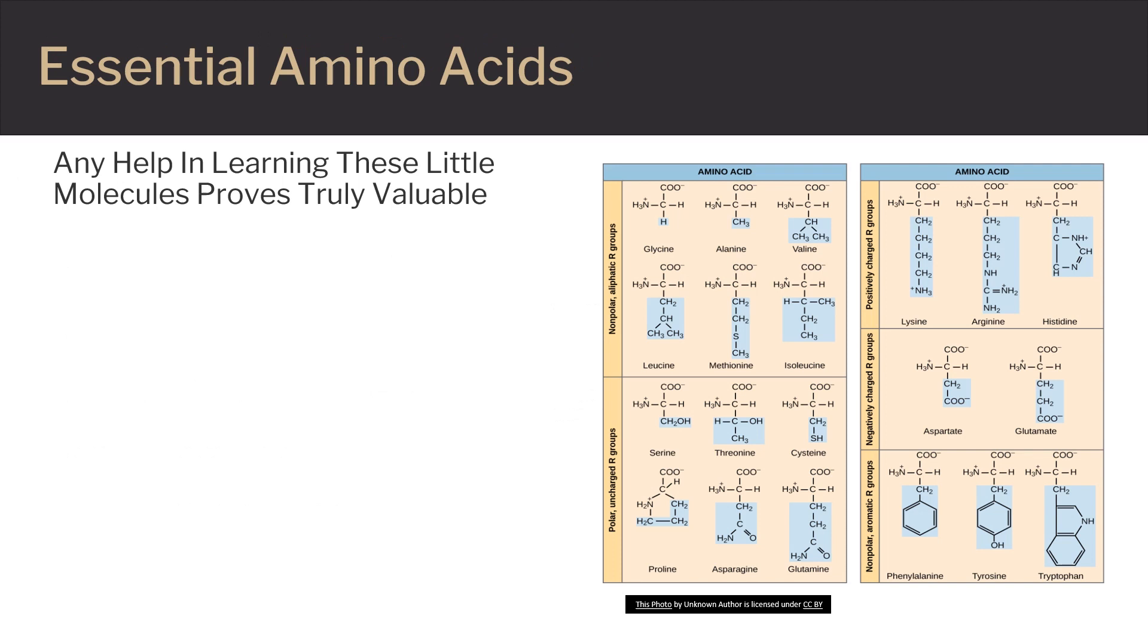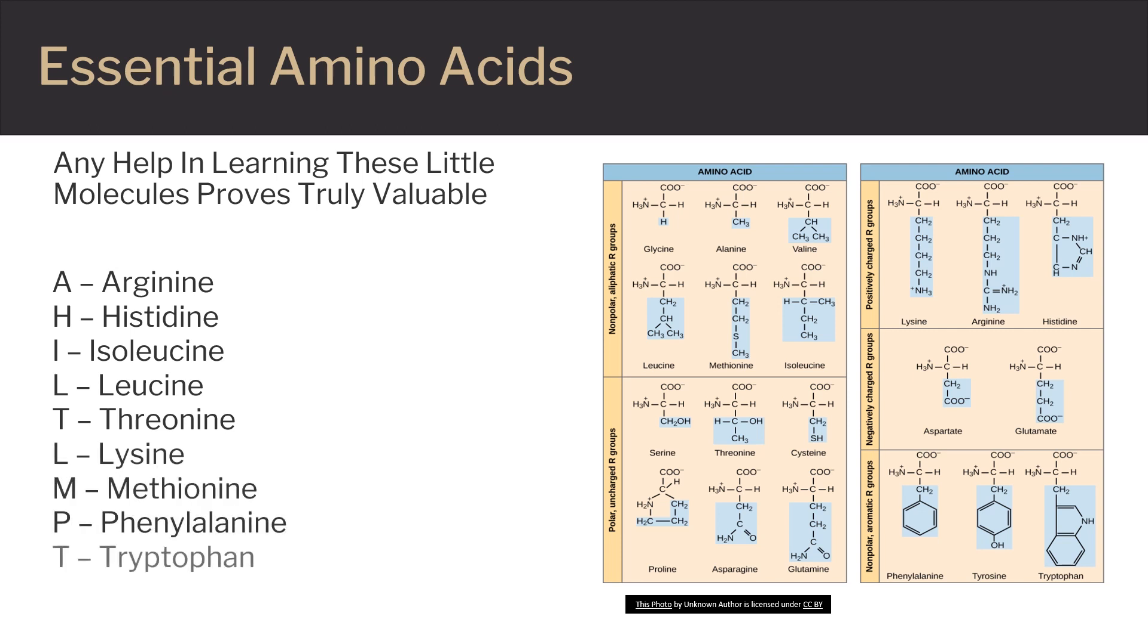For remembering essential amino acids, any help in learning these little molecules proves truly valuable. A is arginine, H is histidine, I is isoleucine, L for leucine, T is threonine, L is lysine, M is methionine, P is phenylalanine, T is tryptophan, and V is valine.